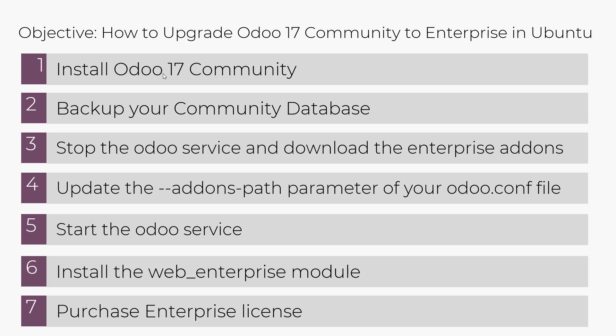Below is the agenda we are going to cover. We'll continue from where we left off where we had installed Odoo 17 Community. Then we are going to take a backup of our community database. We'll then stop the Odoo service and download the enterprise add-ons. After that, we are going to update the add-ons path parameter in the Odoo config file, start the Odoo service, install the web enterprise module, and finally purchase the enterprise license.